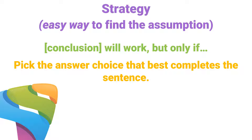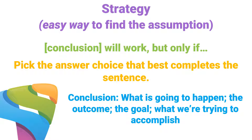It's that easy. In other words, if the answer choice you pick out is true, then the conclusion has a real shot at working. When you're picking out a conclusion, you're looking for things like what's going to happen, the outcome, the goal, or what we're trying to accomplish — something like that.